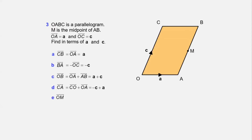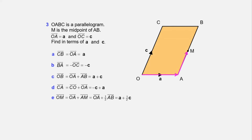Find vector OM. Vector OM = OA + AM. OA = a and AM is half of AB, which is half of c. So vector OM = a + ½c.